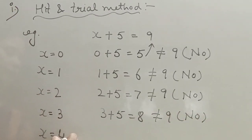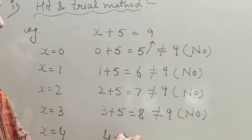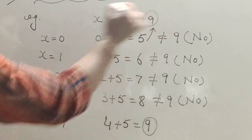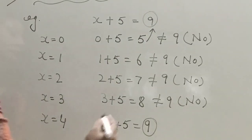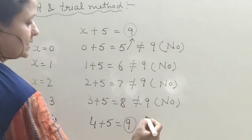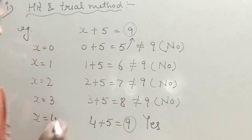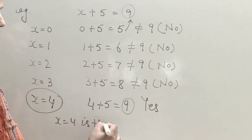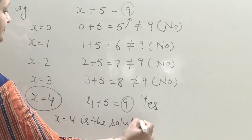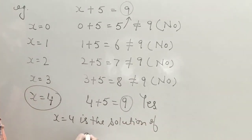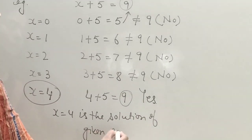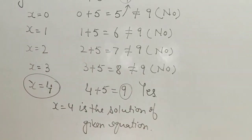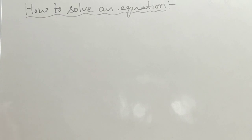Putting x equals 4: 4 plus 5 equals 9, which is what we need. That is our solution. So x equals 4 is the solution of the given equation. By this method, we can find the solution.